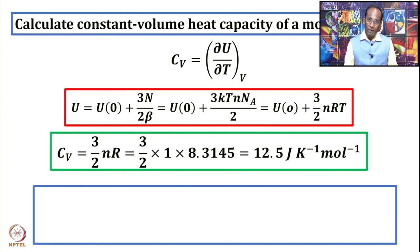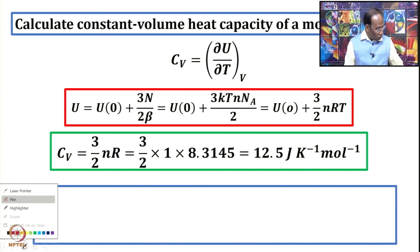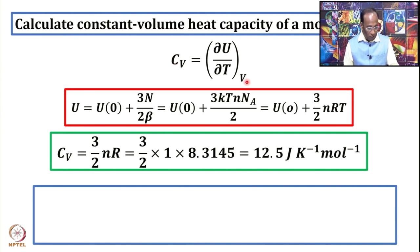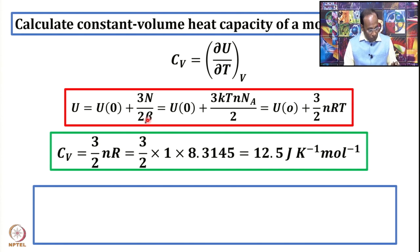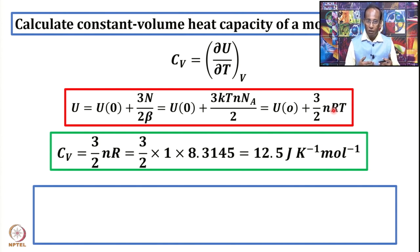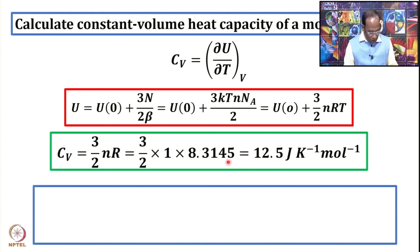If we impose constant volume constraints, then the definition we need to use is Cv = (∂U/∂T) at constant volume. In one of the previous lectures, we showed that U = U₀ + 3N/2β. We also derived this expression in terms of Boltzmann constant and temperature, and equated it to (3/2)NRT. This is for the translational motion of a monatomic gas in three dimensions. Substituting the numbers, we got Cv = 12.5 joules per Kelvin per mole.